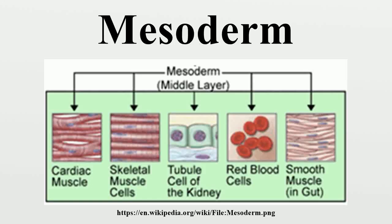In all bilaterian animals, the mesoderm is one of the three primary germ layers in the very early embryo. The other two layers are the ectoderm and endoderm, with the mesoderm as the middle layer between them.